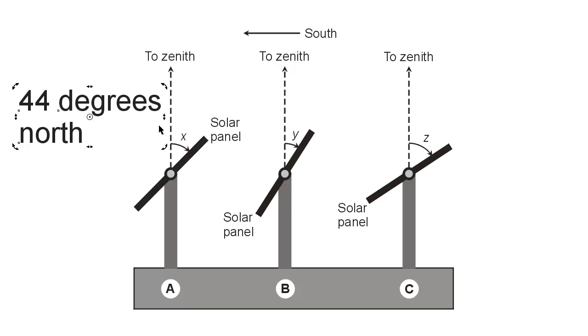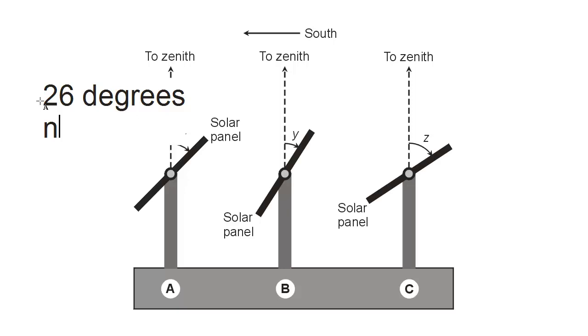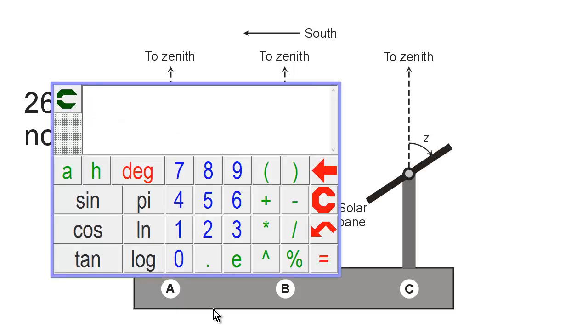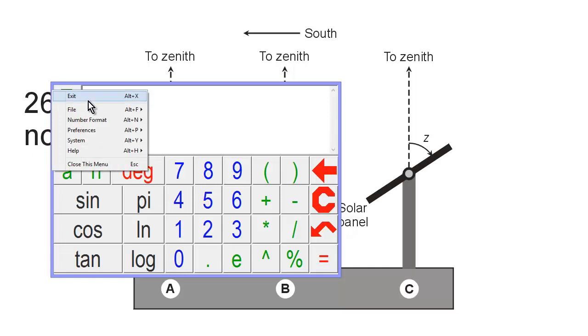That's 90 minus 44. If, on the other hand, I decided to move back to Miami, Florida, which is roughly at 26 degrees north latitude, then an optimum all year position here would be 90 minus 26. Well, you tell me what that is. 90 minus 26. Am I getting old yet? 64 degrees. I should have been able to do that in my head.